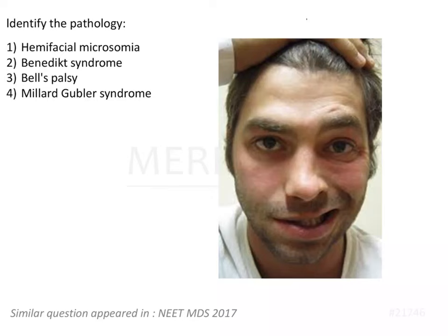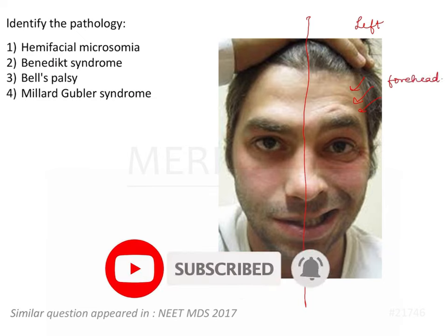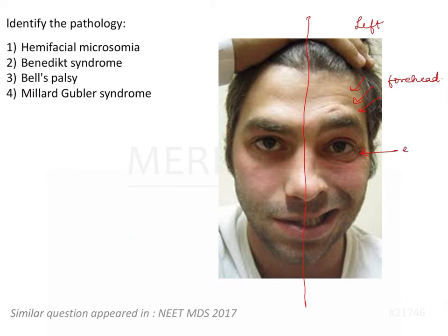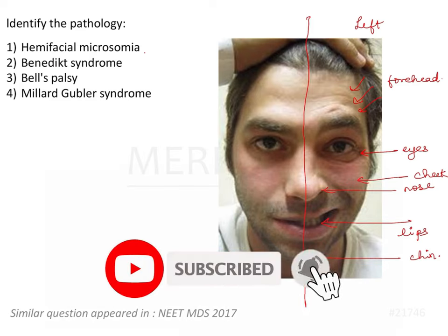Let's identify the pathology from the image. The left side of the face is affected — there is some frown on the forehead, the eyes are twitching, the nose is deviated, the cheek is deviated, and there is a deviation in the lips and the chin. So the entire left half of the face is affected, whereas the right side is unaffected.